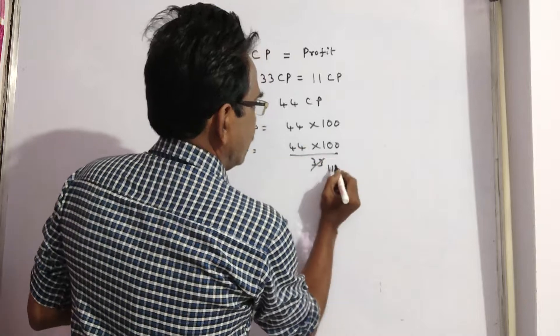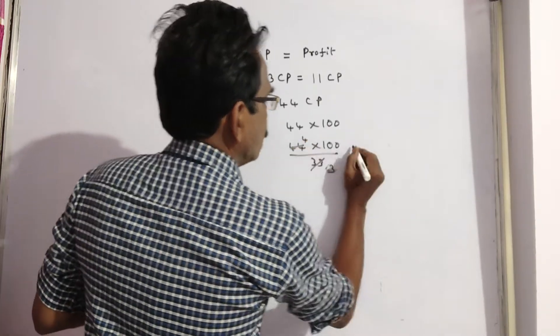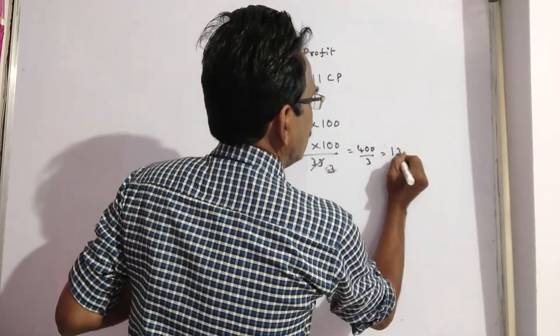3 into 11, 11 threes, 11 fours. 400 by 3, that is equal to 133, 1 by 3.